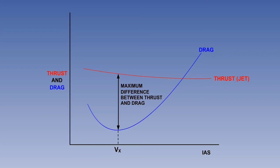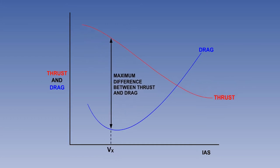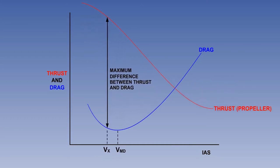With a propeller-driven aircraft, where thrust decreases with speed, the maximum difference will usually occur at a speed below VMD.